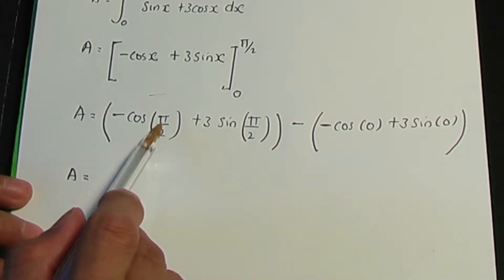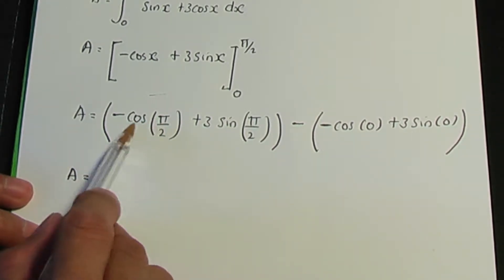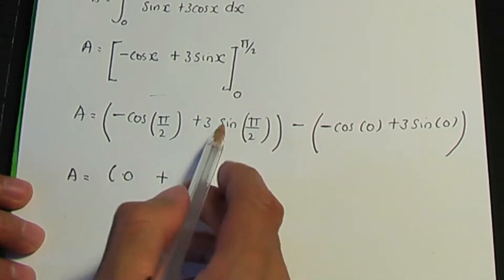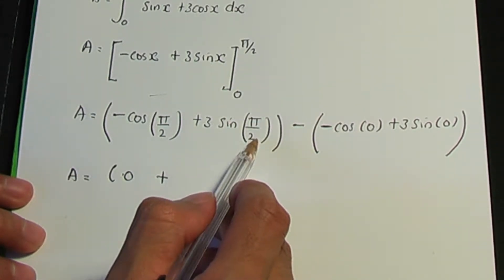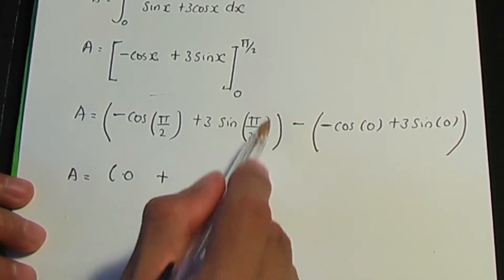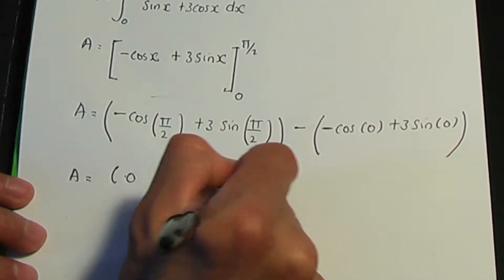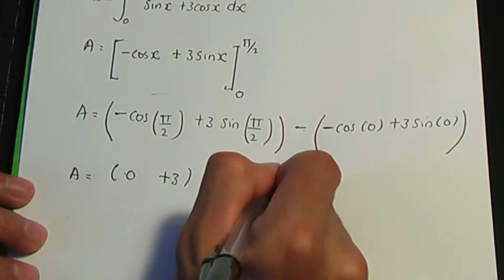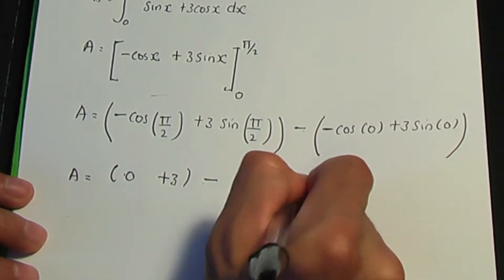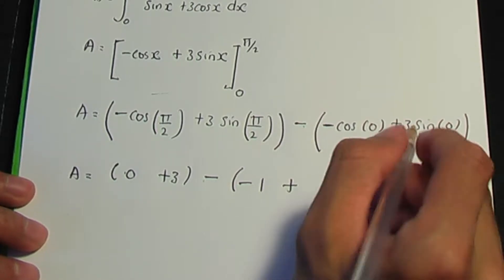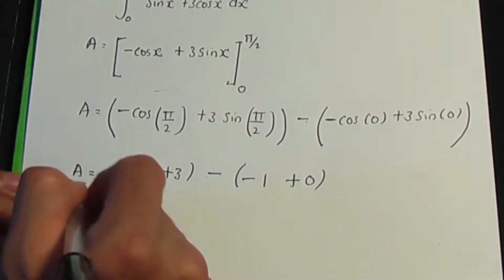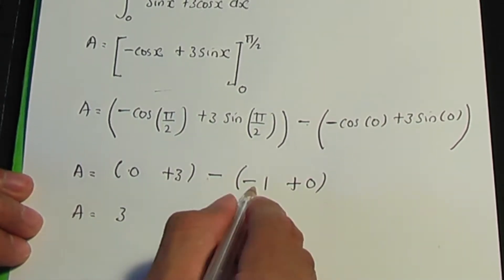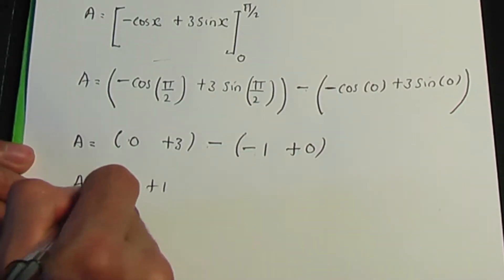Using standard results: cos of pi over two equals zero, so the first term is zero. Sine of pi over two is one, so 3 times one equals three. Then cos of zero is one and sine of zero is zero. So we have three plus zero minus (minus one plus zero), which simplifies to three minus minus one.